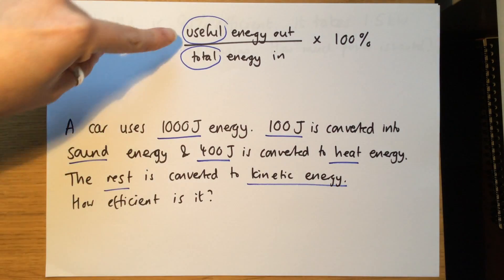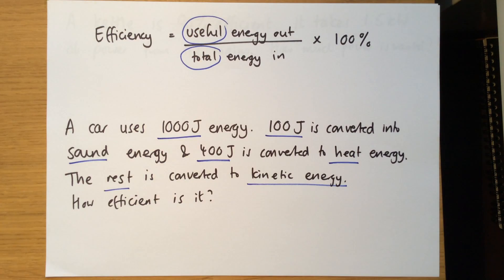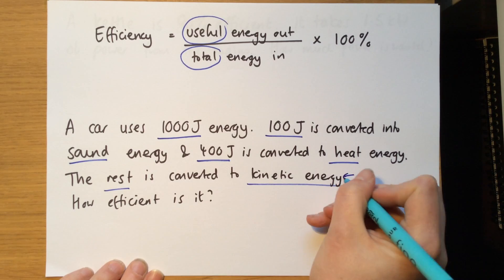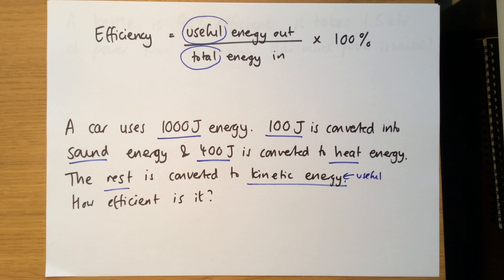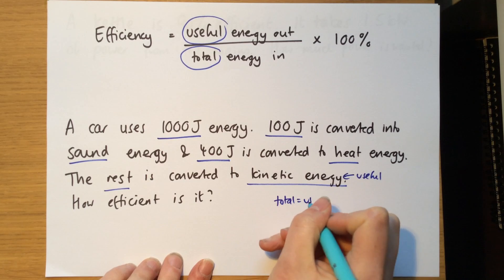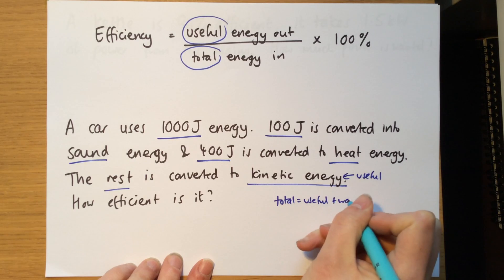So we know that we need to look for the useful energy out. Now, a car's useful energy is clearly movement energy, because a car helps things to move. Now, that's also known as kinetic energy, so this is the useful stuff. But it hasn't told us how much there is, but we can work it out. Because the total energy has got to equal the useful plus the waste.